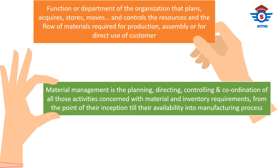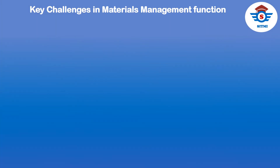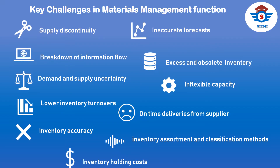In a complex supply chain network, materials management in the global scenario faces many challenges, which include supply discontinuity — also referred to as stock-outs — breakdown of information flow throughout supply chain partners and planning systems, inaccurate forecasts, demand and supply uncertainty, excess and obsolete inventory, lower inventory turnovers, inventory holding costs, inflexible capacity, inventory accuracy issues, wrong inventory assortment and classification methods, and wrong inventory decisions concerning replenishment planning.